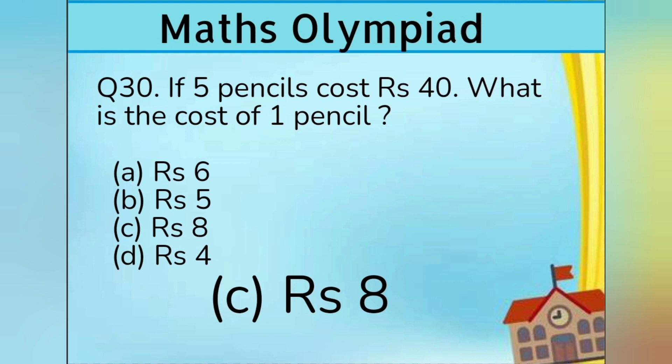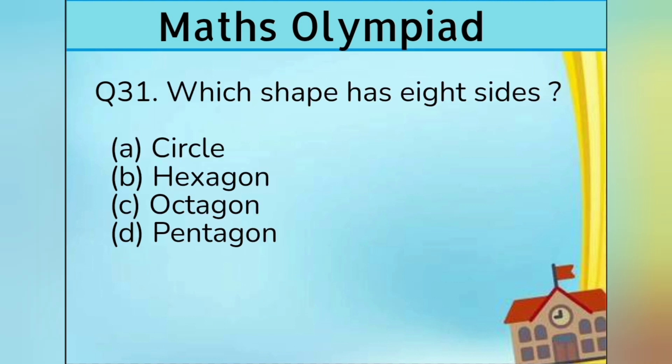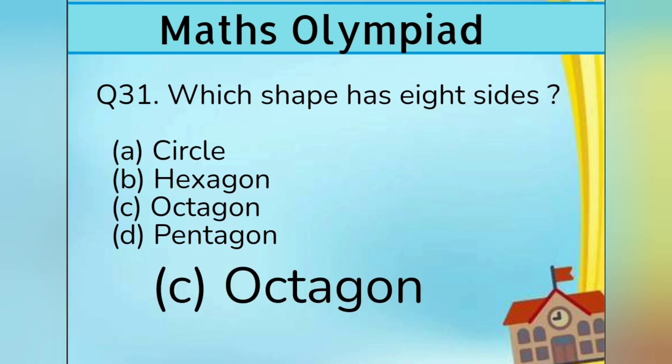Question number 31. Which shape has 8 sides? Option A Circle, Option B Hexagon, Option C Octagon, and Option D Pentagon. Answer is Option C Octagon.